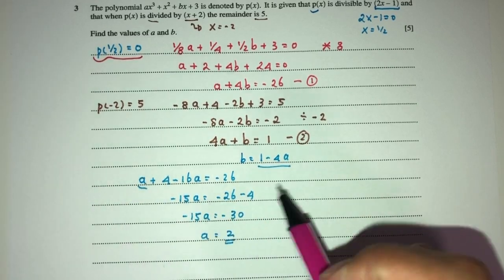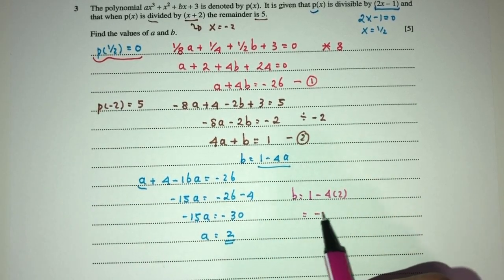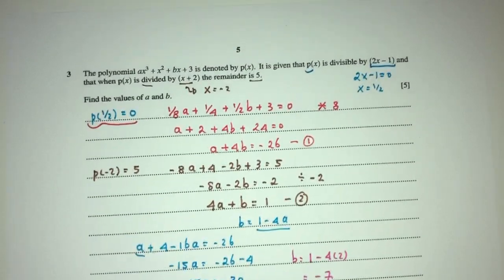So finally, b will be what? 1 minus 4 times 2, that should be minus 7. So a is this, b is this, and this is your question number 3.